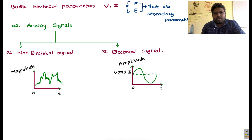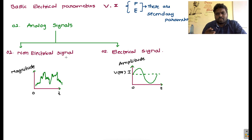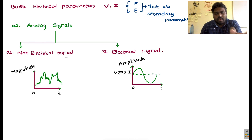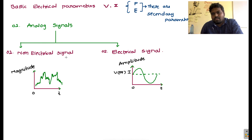In real time, all the signals we receive are in non-electrical format. We need to convert these non-electrical signals to electrical signal format, because our electronic systems — whether analog systems or digital systems — can only understand electrical signals. The raw non-electrical signal cannot be processed by those systems. So we need to convert the non-electrical signal to electrical format, then provide that electrical signal as input to the analog or digital system so it can be processed.